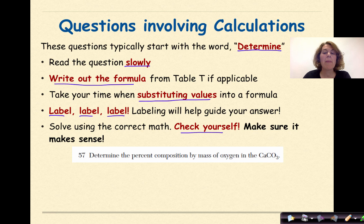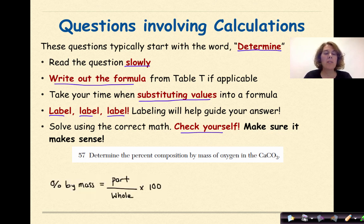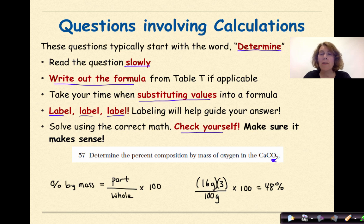Determine the percent composition by mass of oxygen in CaCO3. Now, in the question already, they gave us the gram formula mass of CaCO3 to be 100 grams per mole. So the first thing we're going to do is write out our formula for percent composition. So that is percent by mass is equal to part over the whole times 100. Then what we're going to do is we're going to substitute in our values. So the part here is the oxygen. Oxygen right here. And there's three of them. The atomic mass of oxygen is 16 times 3 divided by 100 times 100. And you should get 48 percent.